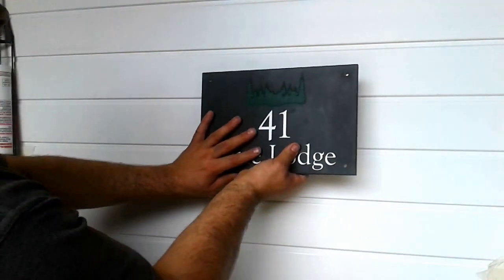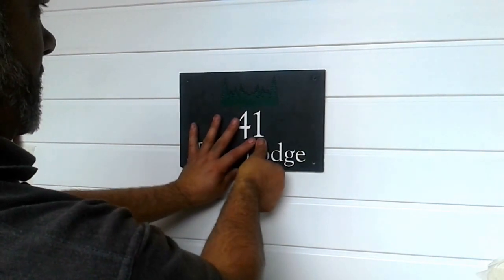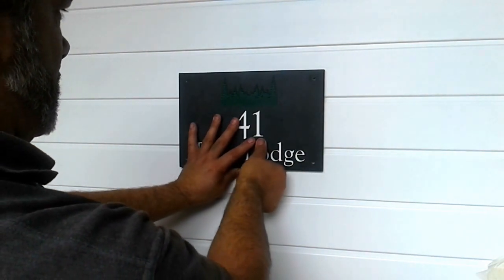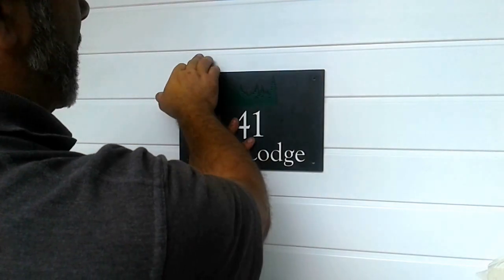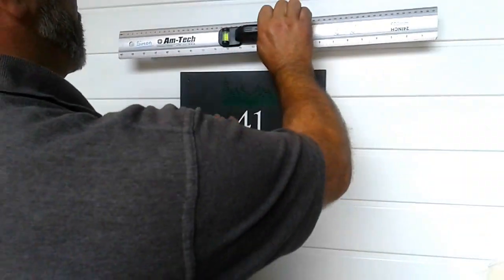Firstly, place your nameplate in the place where you want it. I think that one looks quite nice there. Now you can go by eye if your lodge has got these lines on it.